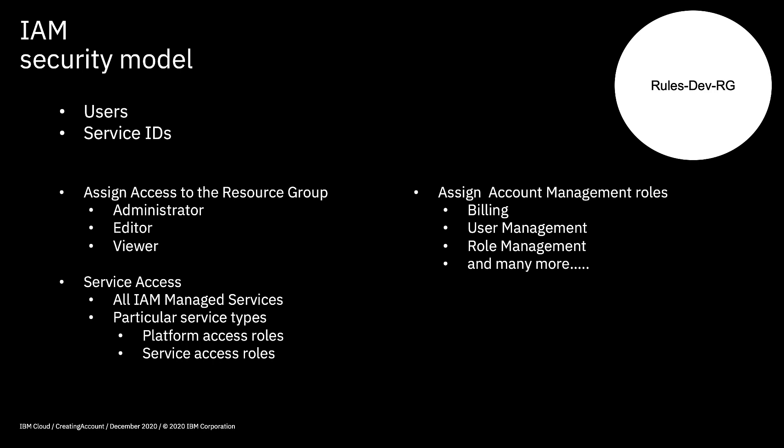In general you can assign access at different levels. There are three different levels to which you can actually assign access within IAM. First, you can assign access at the resource group level. Assigning access there you can provide administrator access, which means that administrator can do lots of platform actions including assigning access policies to other users within the resource group. You can provide editor rights, which allows you to do most things within accounts but not assign any other access policies. Or you could be a viewer, which means you can generally see what services have been assigned into the resource group.